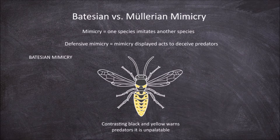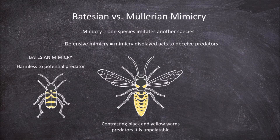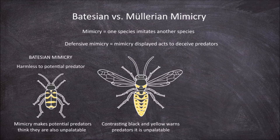Batesian mimicry is where you have a species that is harmless to the potential predator but mimics a dangerous or unpalatable species so the predator avoids it. The example we will use is the wasp beetle. The wasp beetle does not sting but has the same contrasting yellow and black striped colouration that is used to deter potential predators into thinking they are also unpalatable.